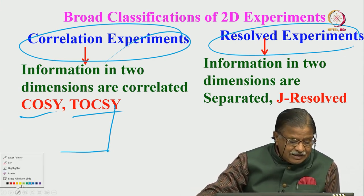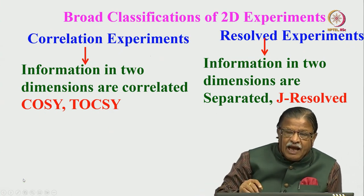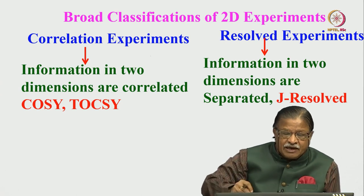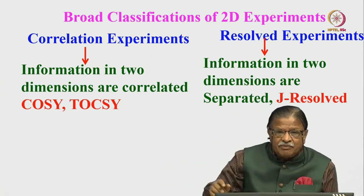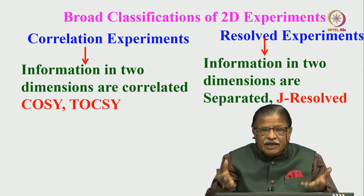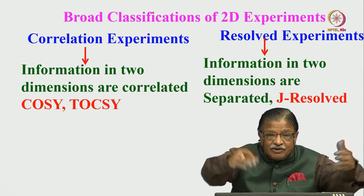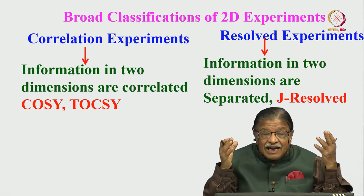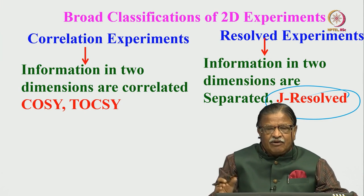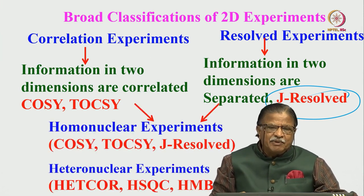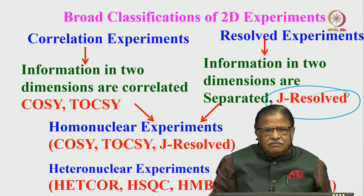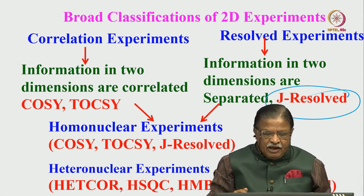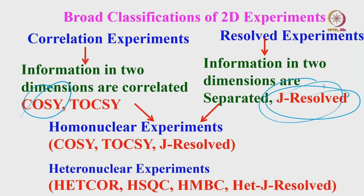In resolved experiments, we have resolved information in two dimensions. For example, couplings in one dimension and chemical shift in the other dimension. Coupling and chemical shift are two different parameters that come together in a 1D NMR spectrum. Can we resolve them into two dimensions — coupling in one dimension and chemical shift in the other? That is called resolving, and those are called resolved-type experiments, such as J-resolved experiments.